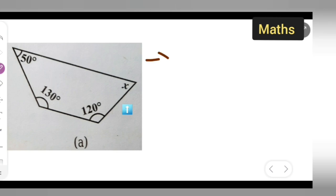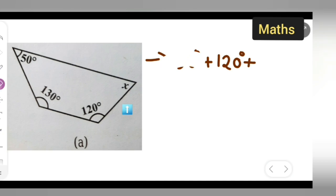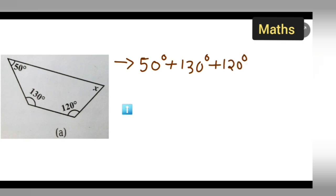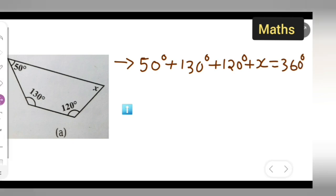So let me start the solution here. We need to add all the interior angles: 50° plus 130° plus 120° plus x is equal to 360°.